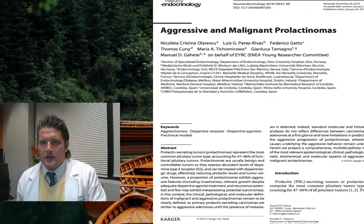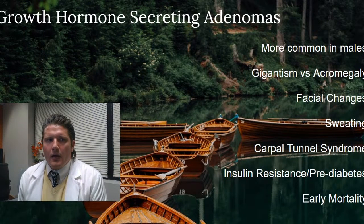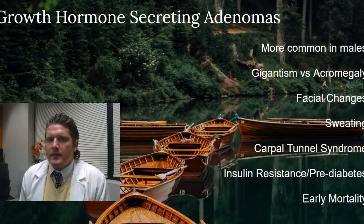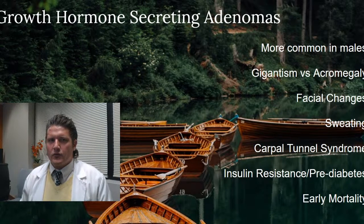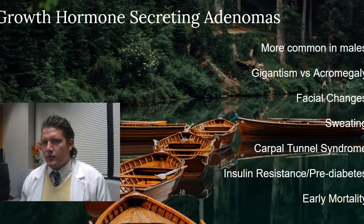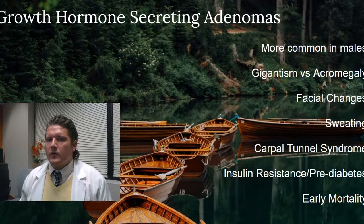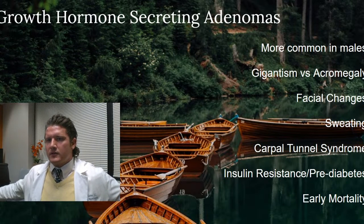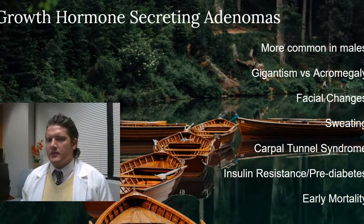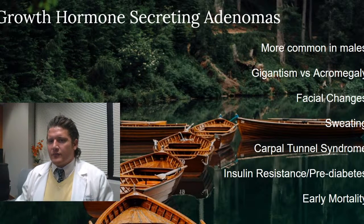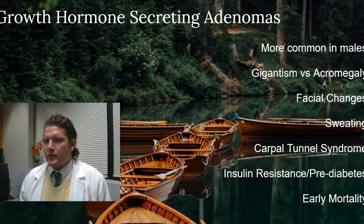Aggressive and malignant prolactinomas are rare but do occur. Growth hormone-secreting adenomas are more common in males — the classic example being André the Giant. When there is excessive secretion of growth hormone before the growth plates are closed, we get gigantism — individuals who are very tall with large peripheral features. After the growth plates are closed, excessive growth hormone causes acromegaly, which is the enlargement of peripheral parts of the body like the hands, feet, tongue, or brow.